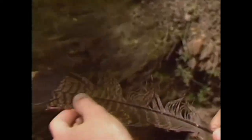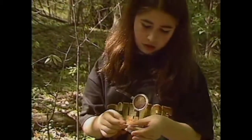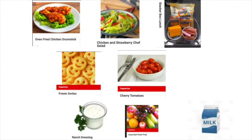A few feathers like these might be all you see of a bird. You should collect any feathers you find — we'll study them later. For lunch today we have an oven-fried chicken drumstick, chicken and strawberry chef salad, a stacker box lunch, potato smiles, cherry tomatoes, ranch dressing, assorted fresh fruit, and a choice of milk.